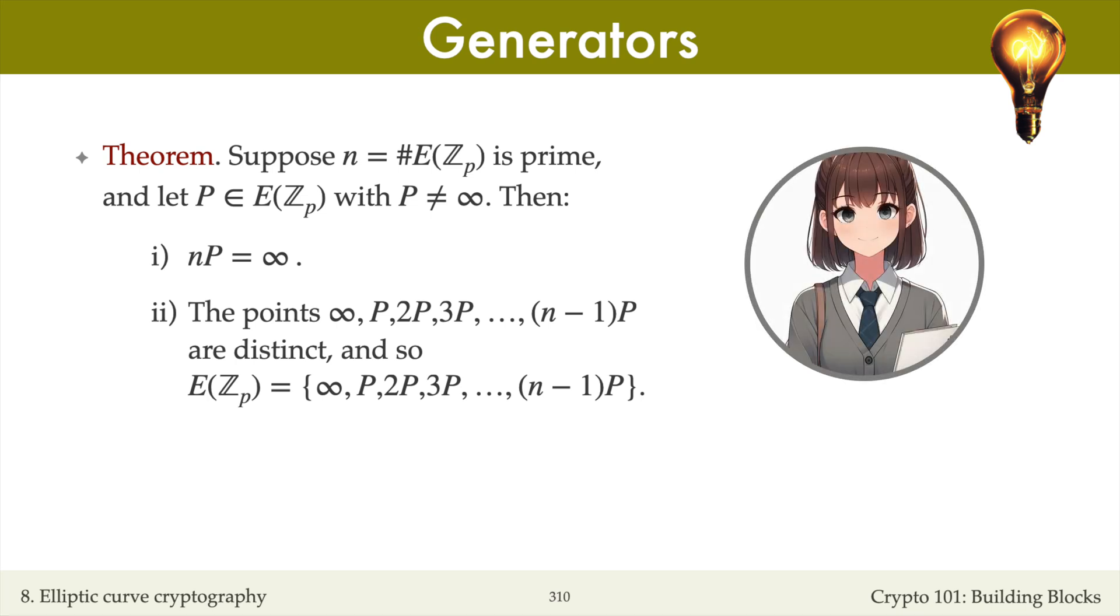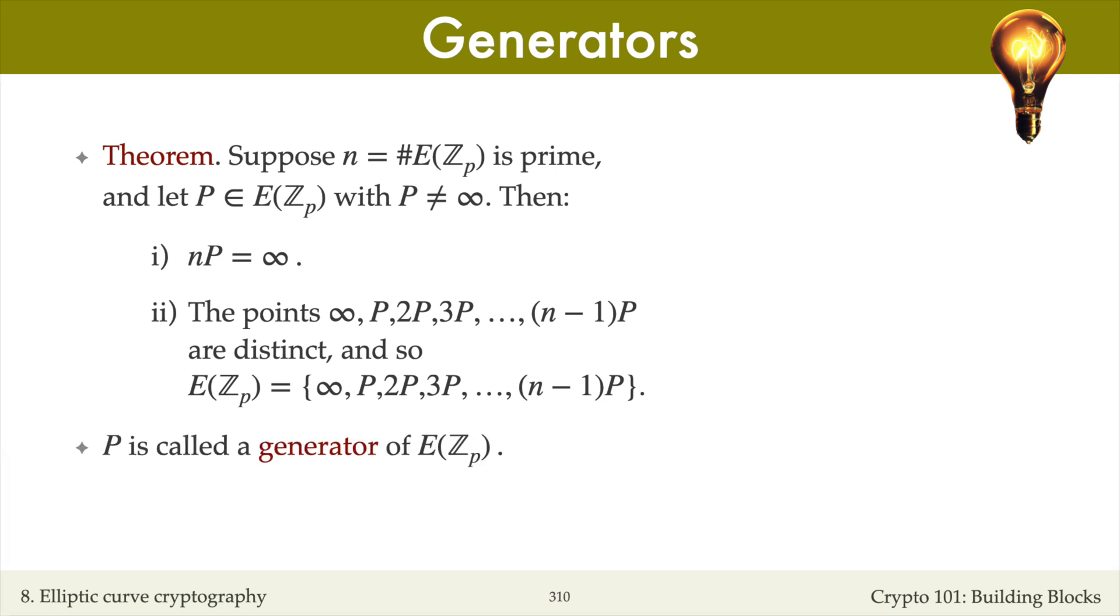If you are familiar with group theory, then you'll notice that this theorem follows from the standard result that all groups of prime order are cyclic. I'll call the point P a generator of the elliptic curve. Note that any point except the point at infinity is a generator.